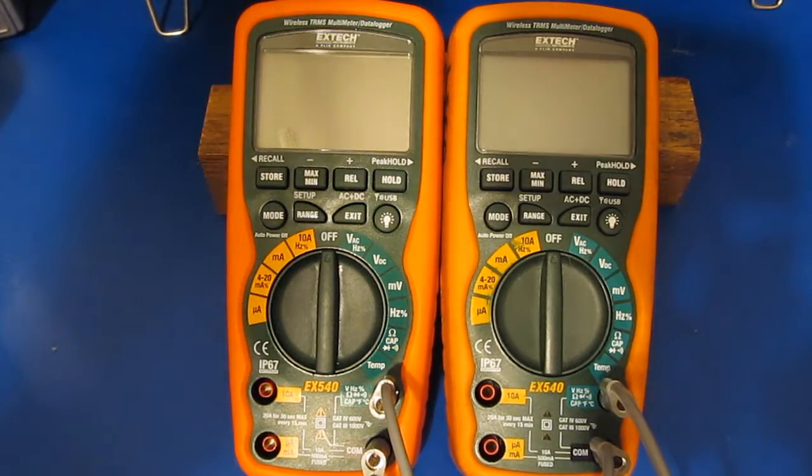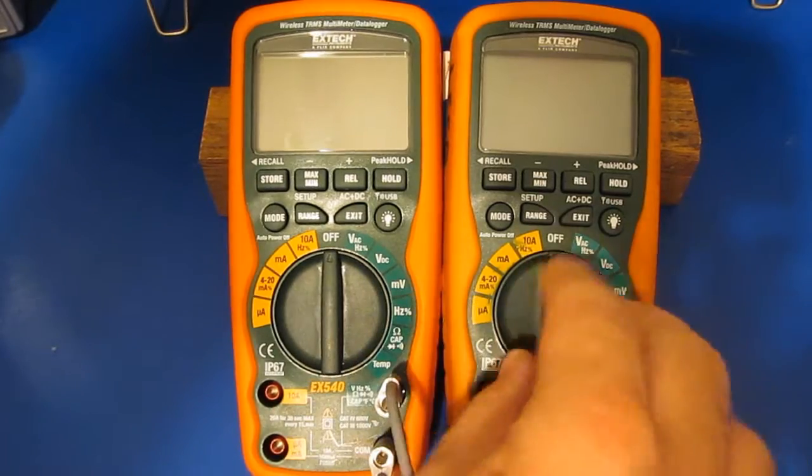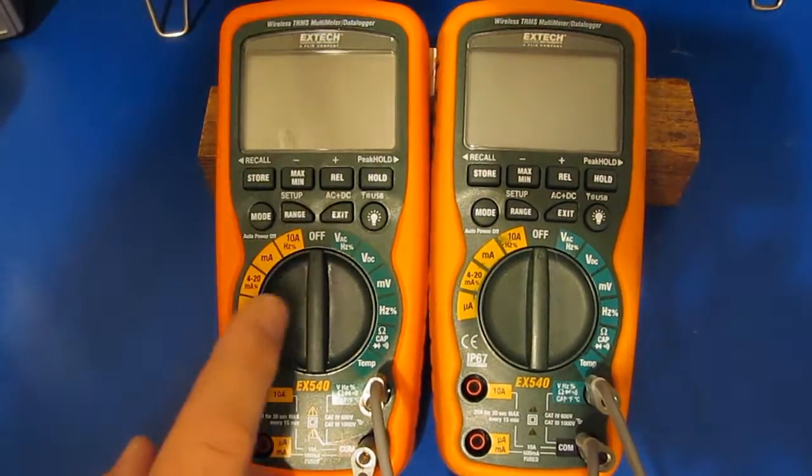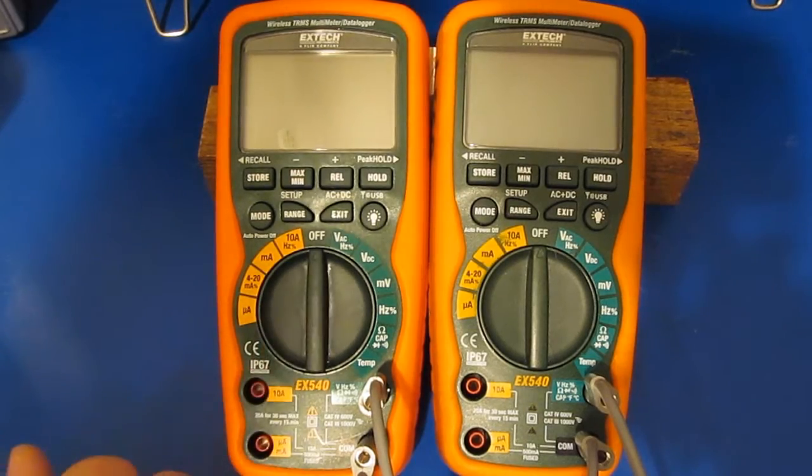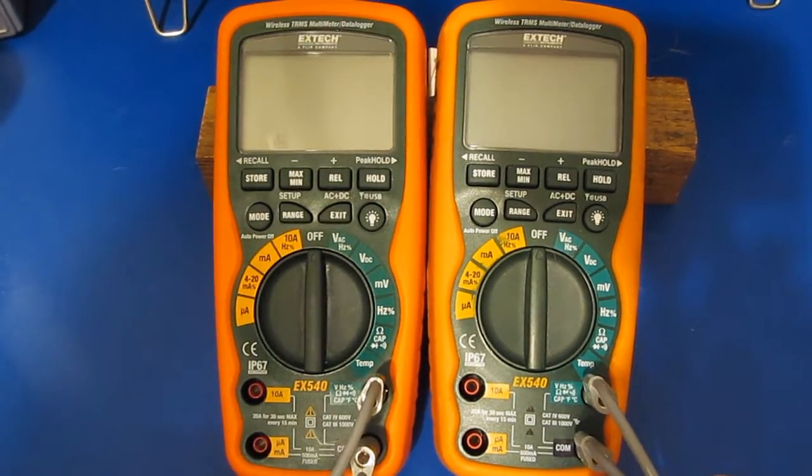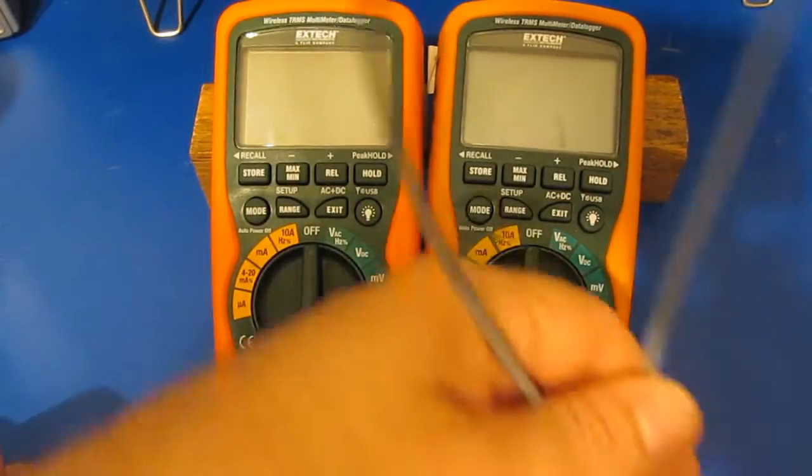Hello again, I've got the two Extech EX540s sitting here. The new one on the left, the original one on the right. I tried to replicate the problem that I'm seeing with the new meter drifting in the AC volt mode.